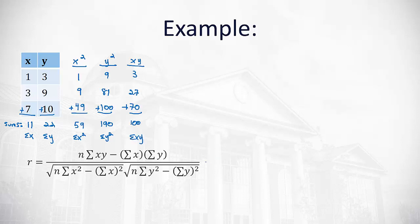Now that we have each of those pieces, we're ready to plug them into our formula. First, the formula asks for n. That's our sample size. We had 3 points. Times the sum of the x y's, which we found out was 100. Minus the sum of the x's, which was 11. Times the sum of the y's, which is 22.